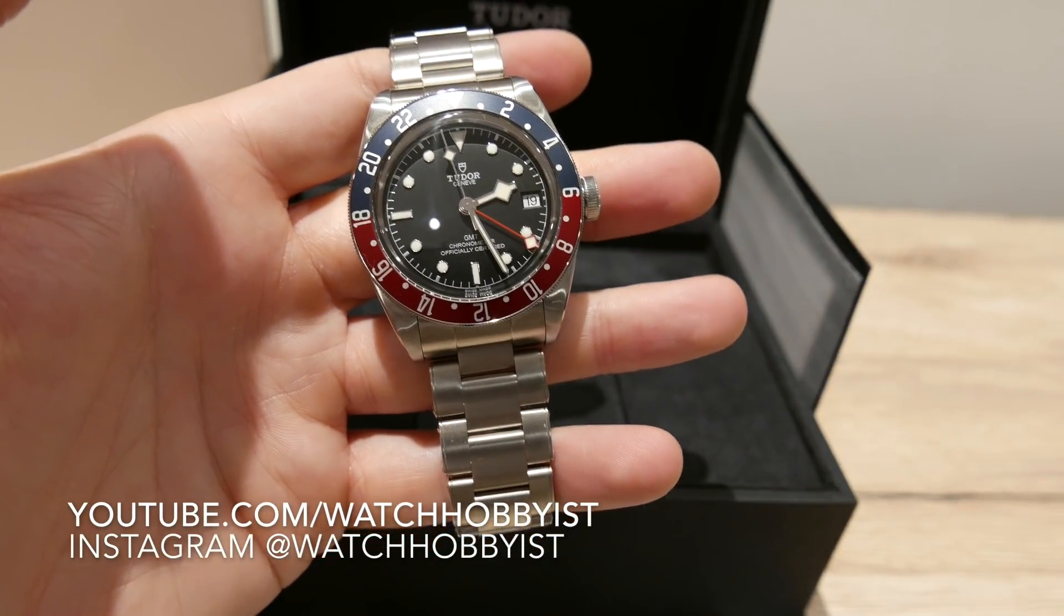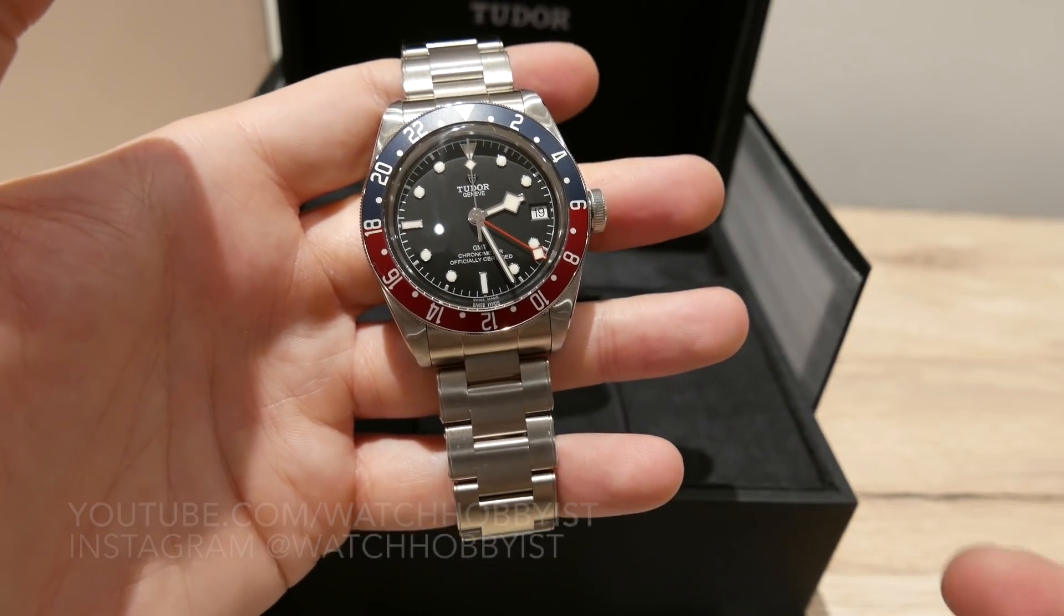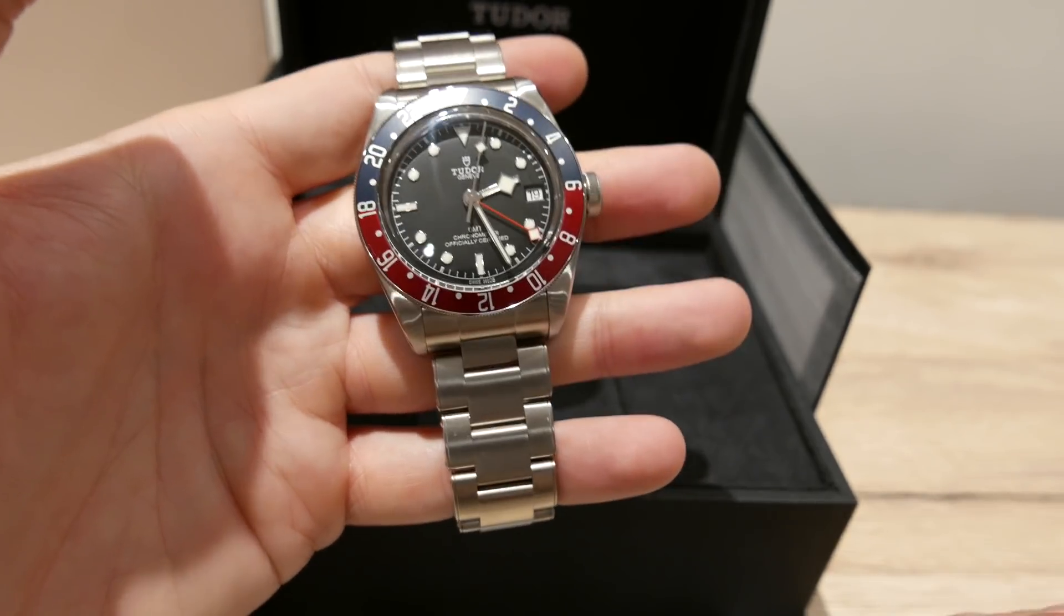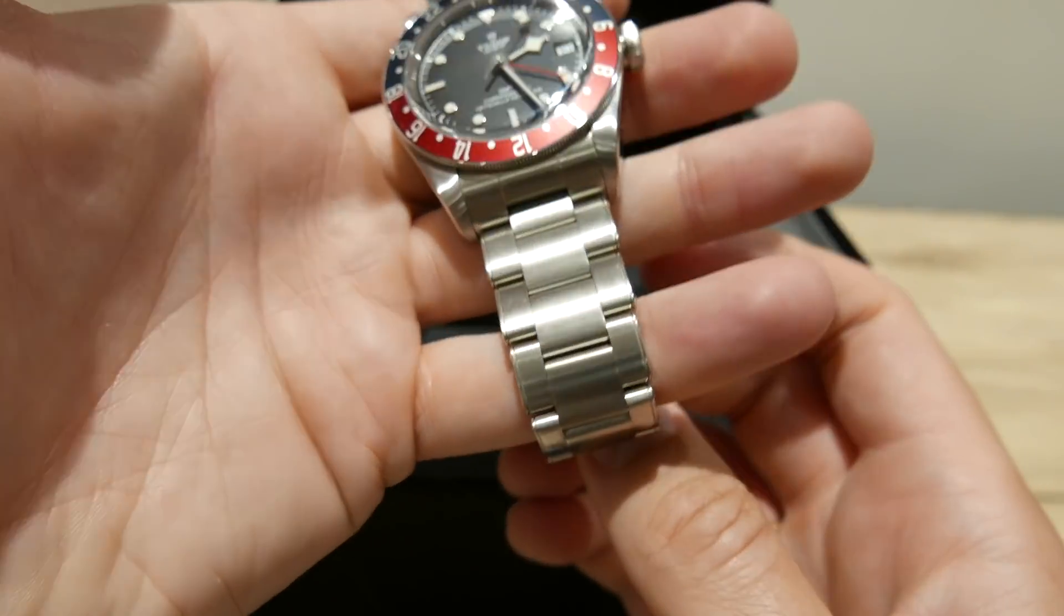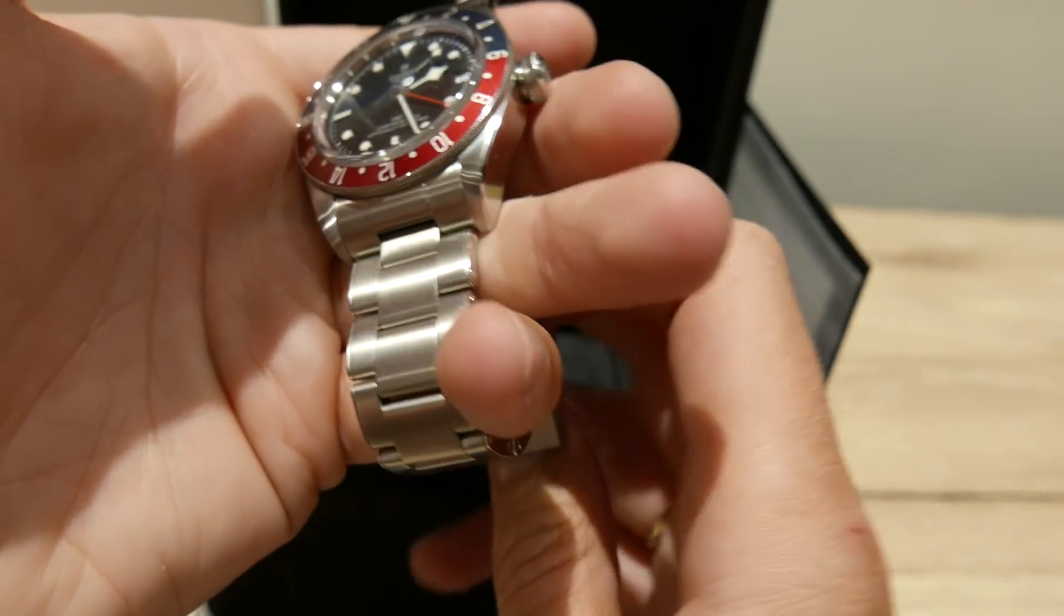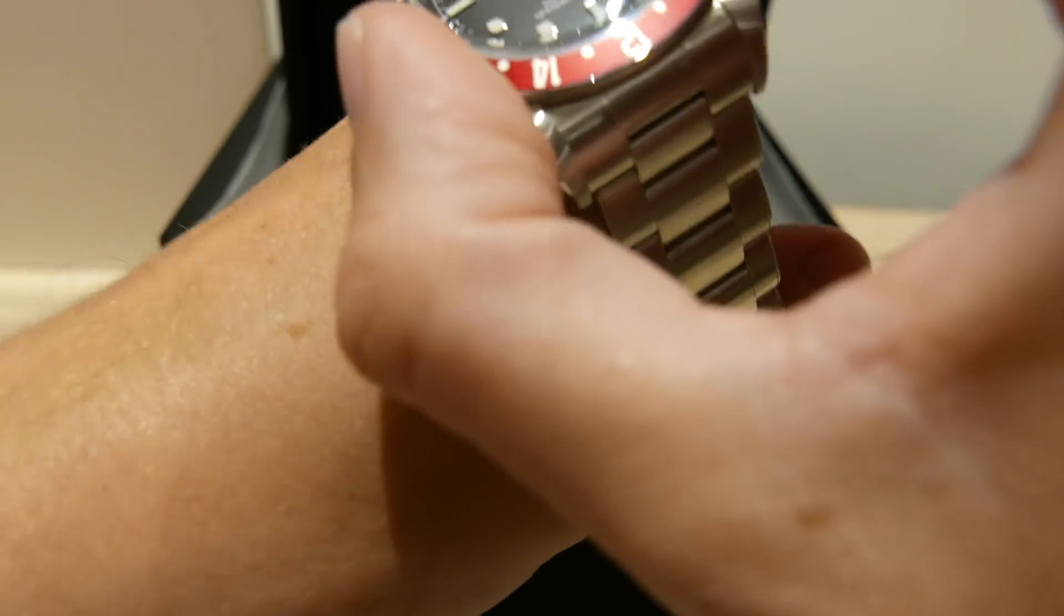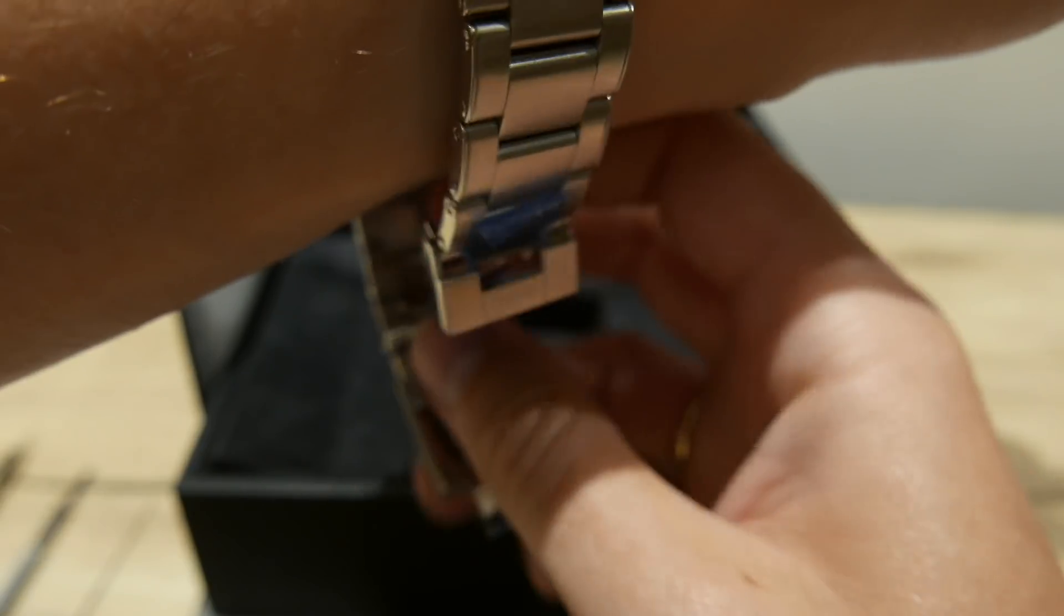Tudors have this unique sort of bracelet clasp system and this watch here I've only just received. So right now it's unsized. I have quite a small wrist, and I'm going to put this on here. I'll just move the box out of the way so we can see here.